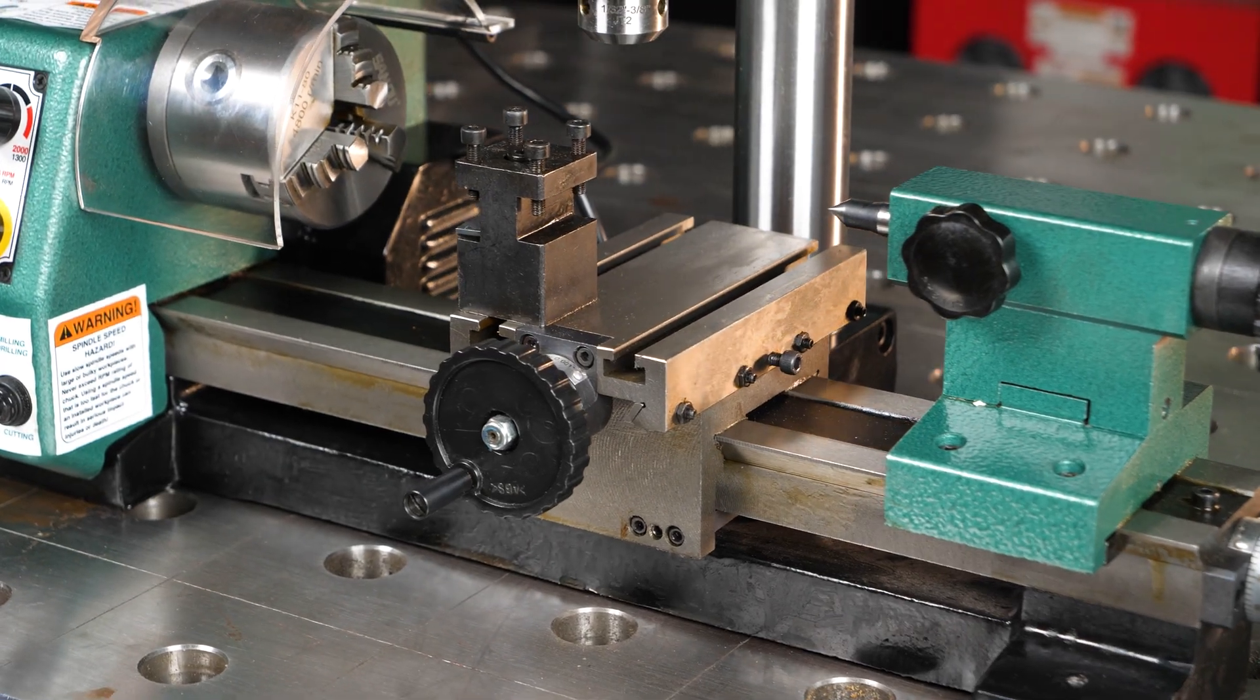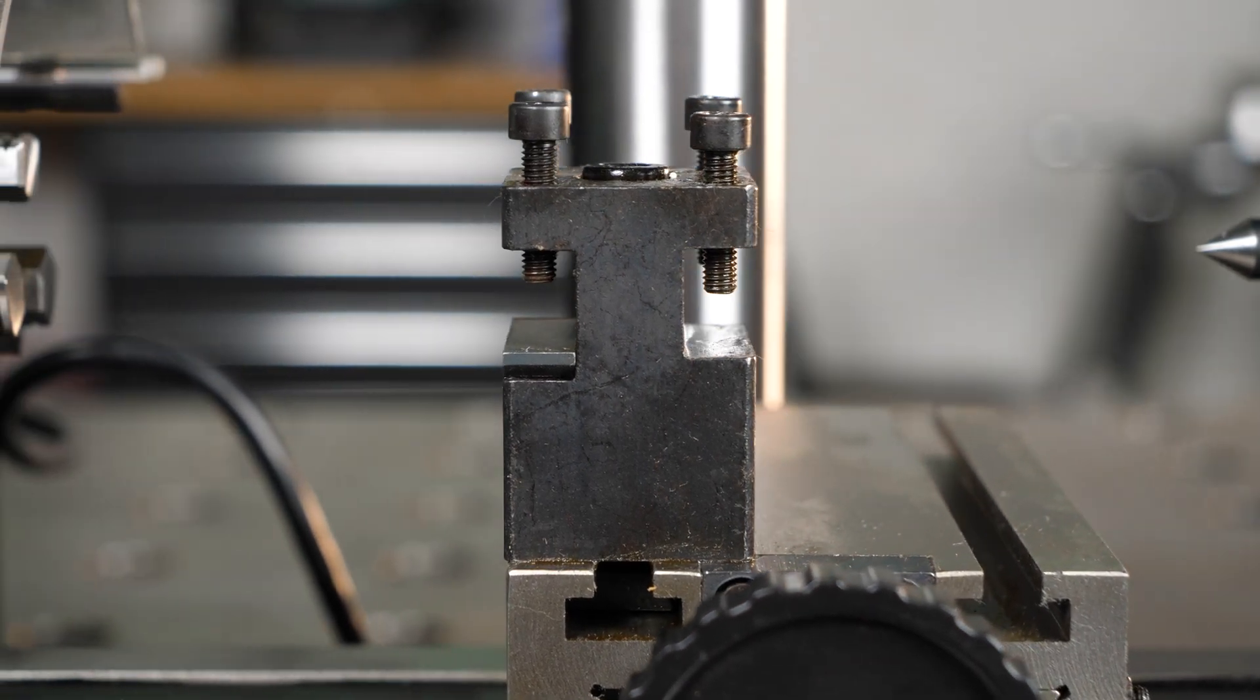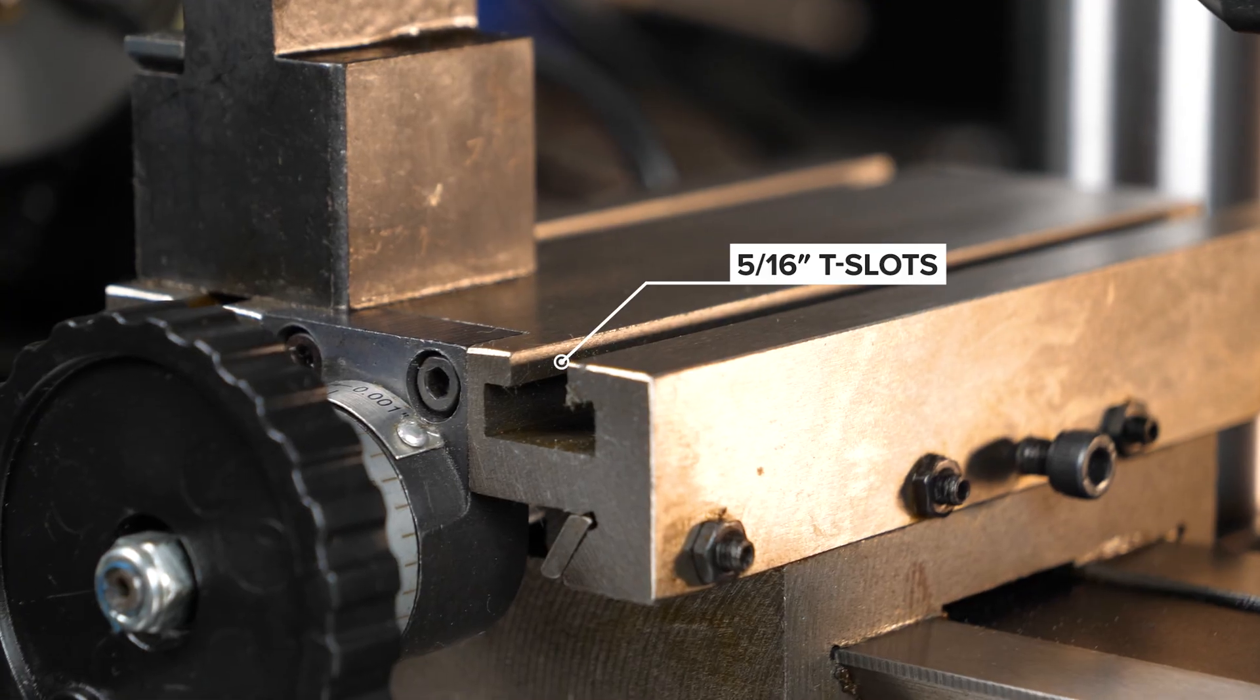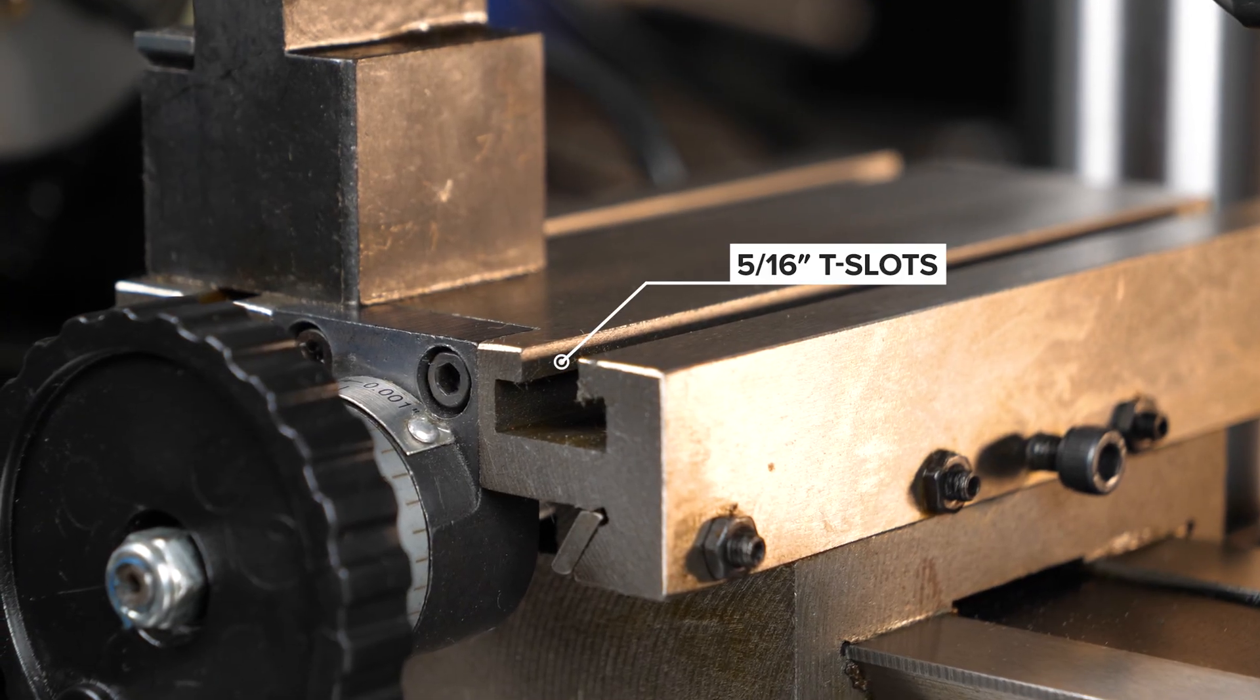The compound rest features a two-way turret tool post and the cross slide conveniently acts as a mill table with two 5/16 inch T-slots for securing your work.